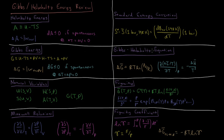The Gibbs-Helmholtz equation tells us how the Gibbs energy changes with respect to temperature, which helps us later derive important properties of phase changes and equilibrium constants. The change in molar Gibbs energy during a pressure change equals the gas constant times temperature times the natural log of the final over initial pressure.